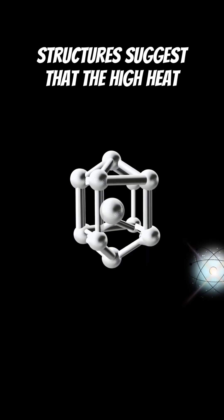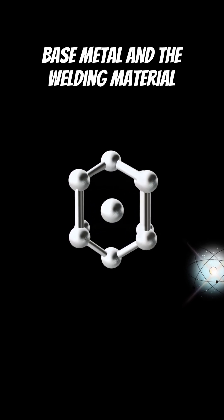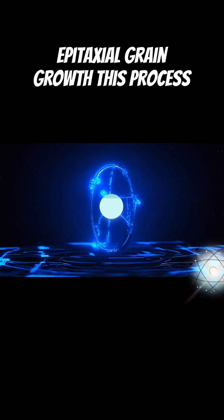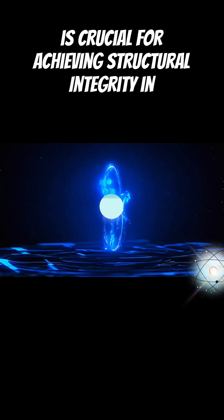The visible grain structures suggest that the high heat input and chemical compatibility between the base metal and the welding material facilitated a seamless fusion, leading to epitaxial grain growth. This process is crucial for achieving structural integrity in the weld joint.